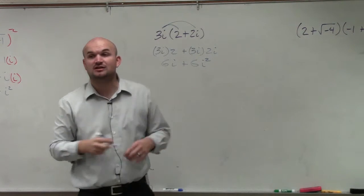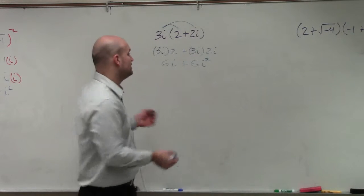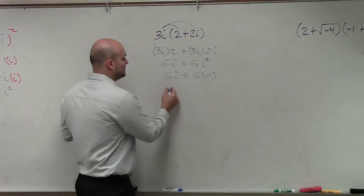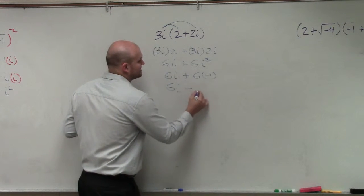But remember, last class we talked about i squared representing negative 1, right? So I have 6i plus 6 times negative 1. Therefore, that gives us 6i minus 6.